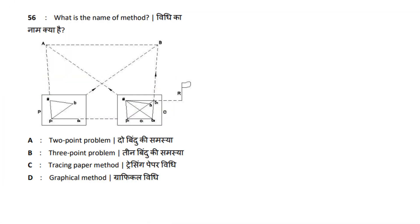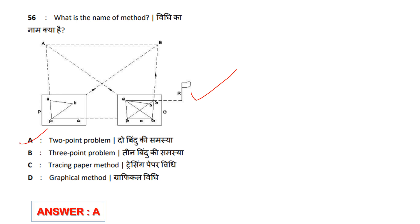What is the name of the method? Options: 2-point, 3-point, Tracing Paper, Graphical. The theory is that the methods are 2-point or 3-point problems. The 2-point uses 2 well-defined points; the 3-point uses 3 well-defined points. Answer is option A — the 2-point problem.